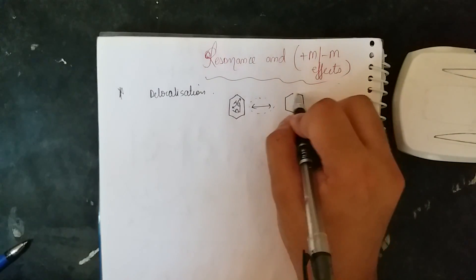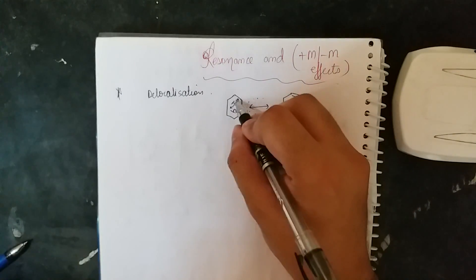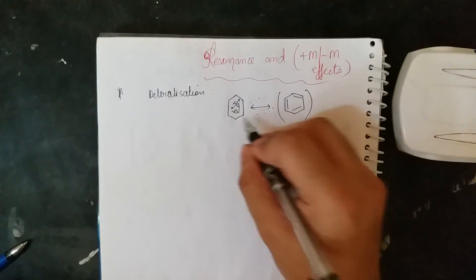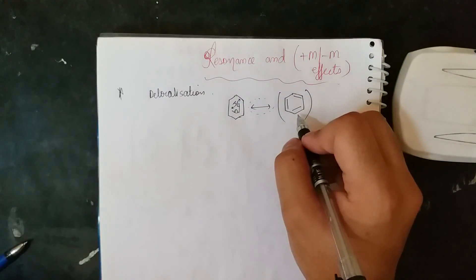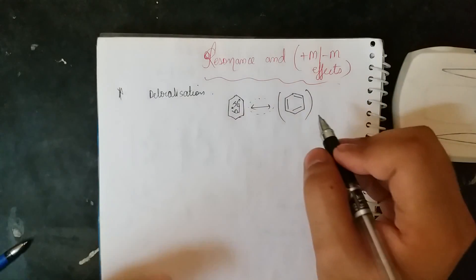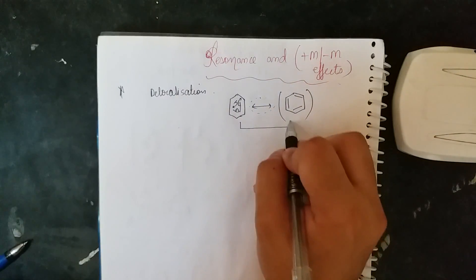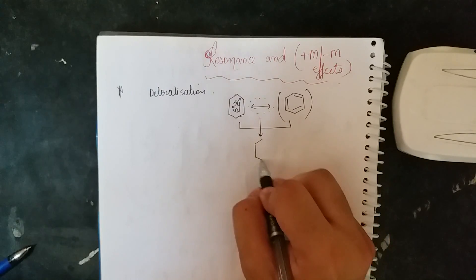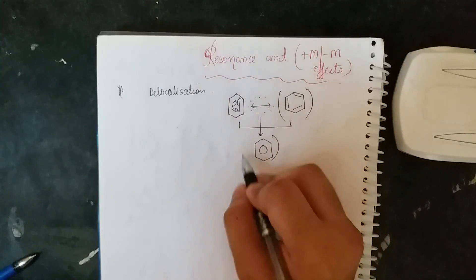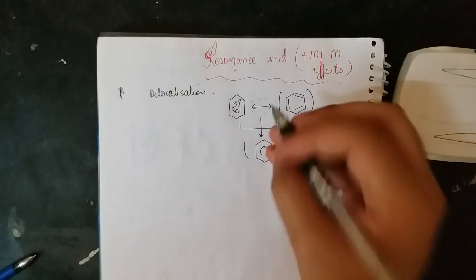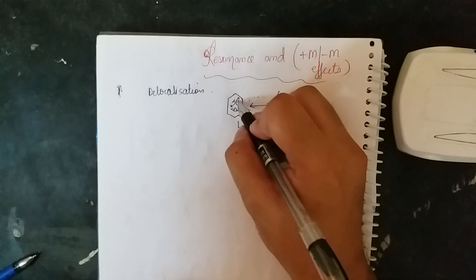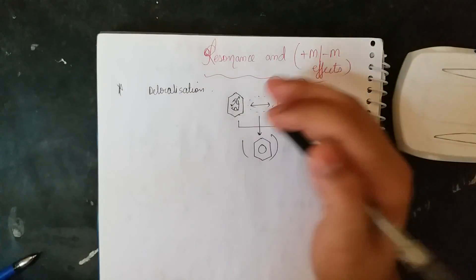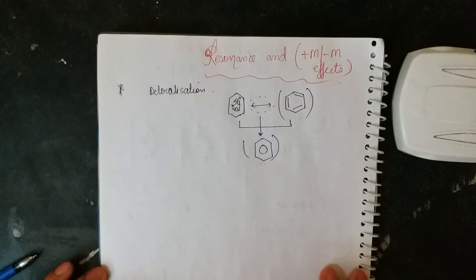You can draw the structure — this goes here, this comes here, and this goes here. So we can draw the structure of benzene like this as well. In actual we take a net structure which is the combination of these two structures, represented like this, because this bond is combined so that all the electrons are in delocalization.